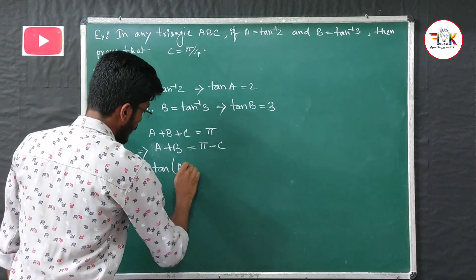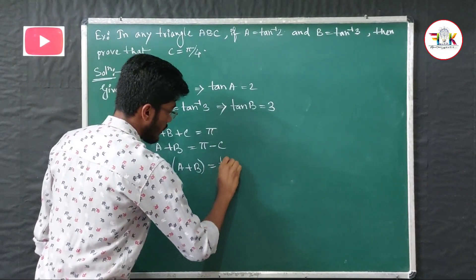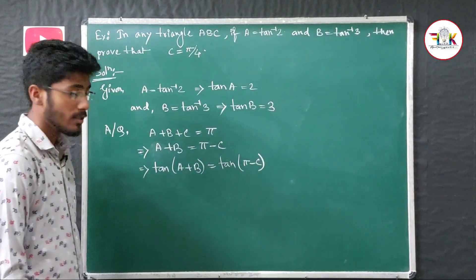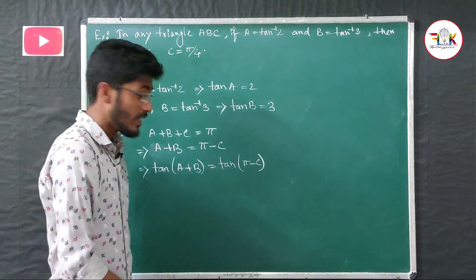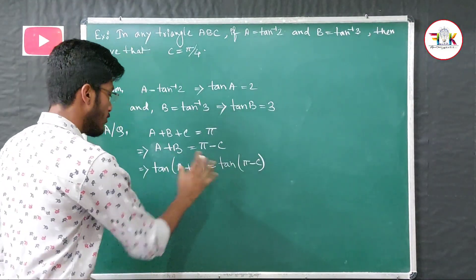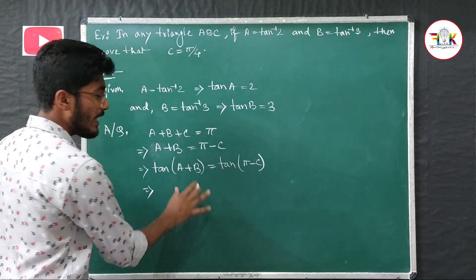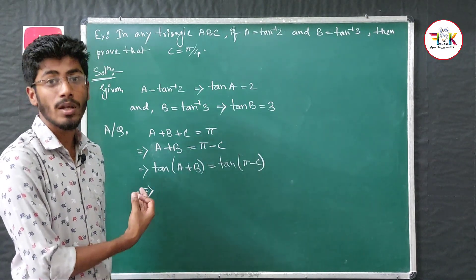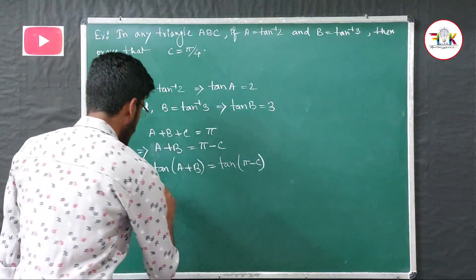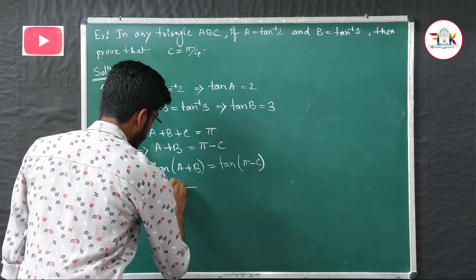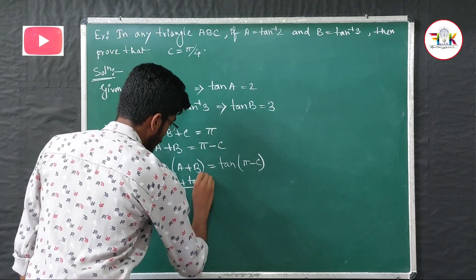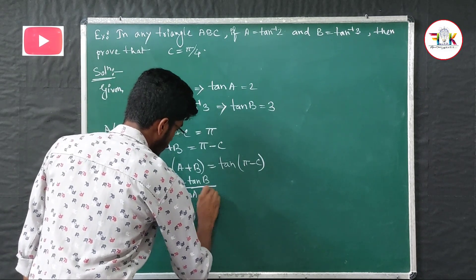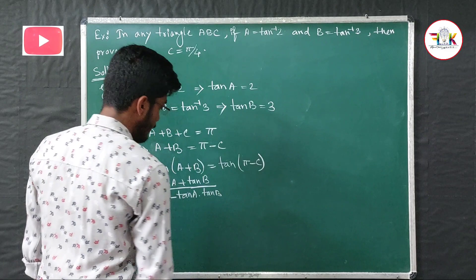So tan(A + B) = tan(π − C) = −tan C. Applying the formula: (tan A + tan B)/(1 − tan A · tan B) = −tan C. Since A = tan⁻¹2 and B = tan⁻¹3, we have tan A = 2 and tan B = 3.